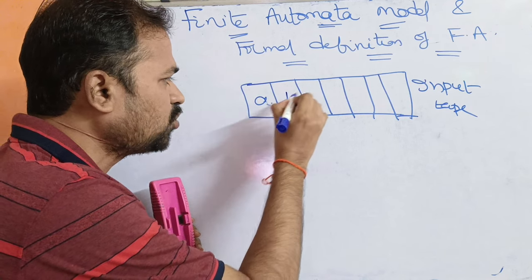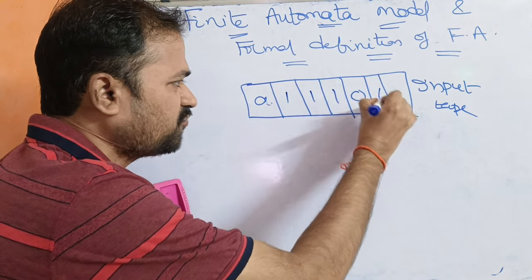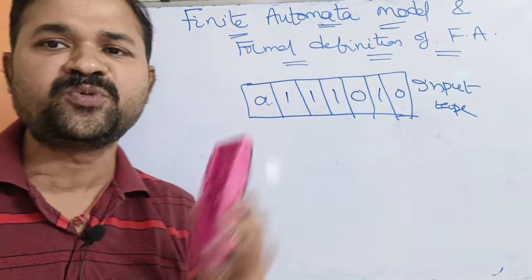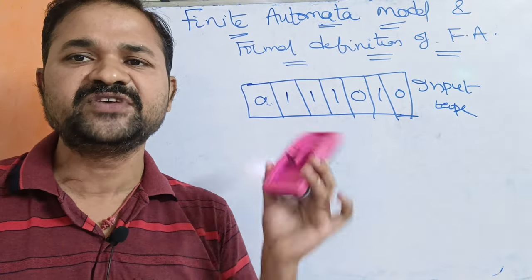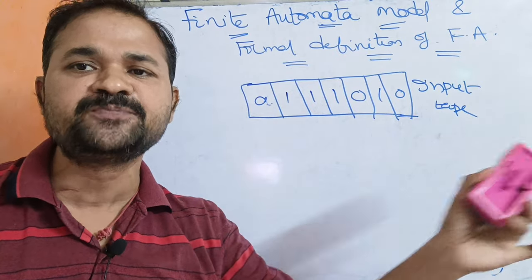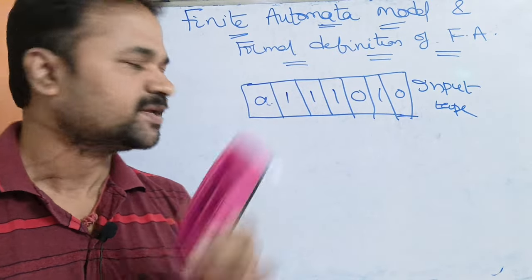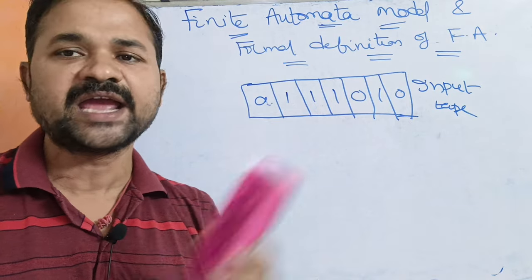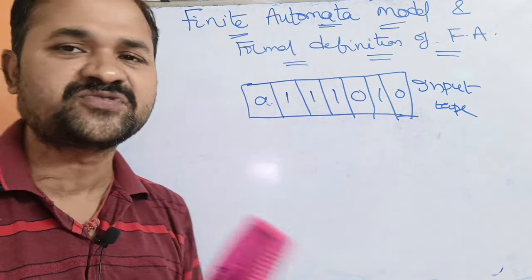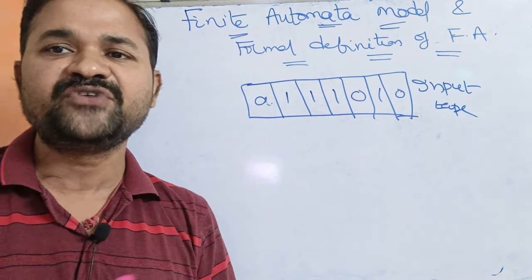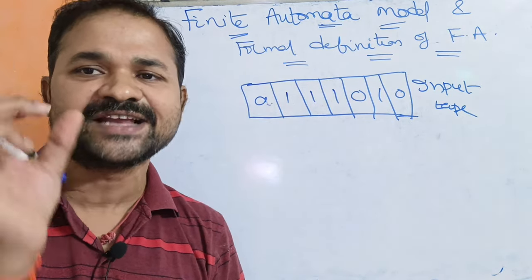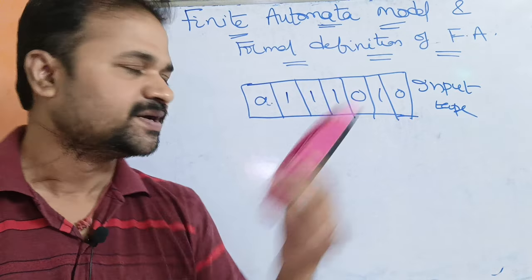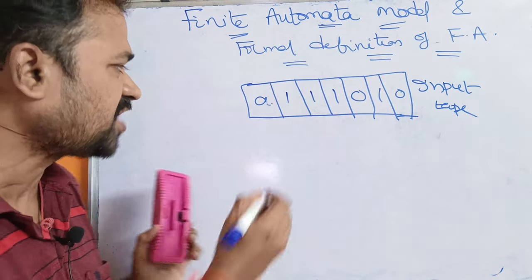The input tape contains an input string with symbols: zero, one, one, one, zero, one, zero. This is the input string. The input tape is divided into a number of cells where each cell can store one symbol at a time. This is the first component.